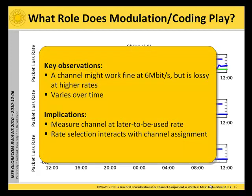The key observations from this experiment are that a channel might work fine at 6 megabits but can be very lossy at higher rates, and if that is the case it can vary over time. The implications for channel assignments are that one should measure the channel at the later-to-be-used bit rate. If we measure the channel at 6 megabits we do not know what performance we can get at 54 megabits per second.